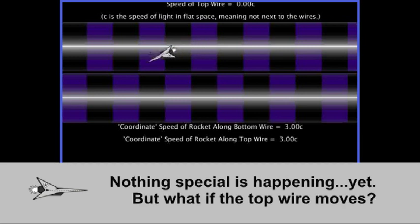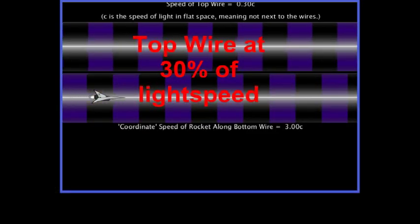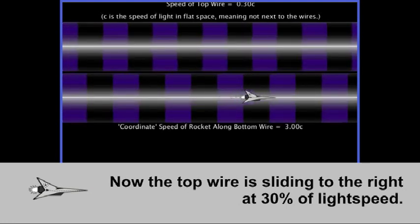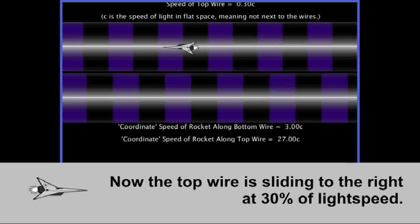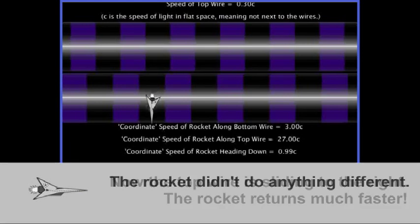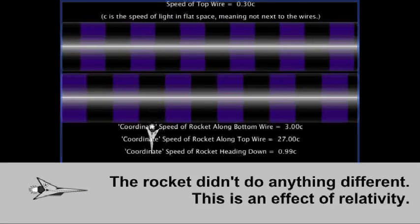But what happens if we start sliding the top wire at a significant fraction of normal flat space light speed? In the next animation, we will slide the top wire at 30 percent light speed. It looks slow, but that's just because the rocket is so very fast. Now watch the rocket on its return journey. It looked much faster, didn't it? But the rocket didn't do anything different. This is a consequence of general and special relativity interacting.